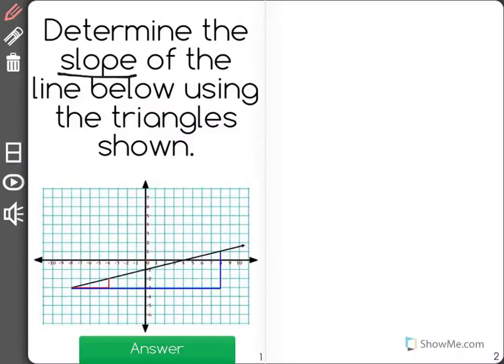Determine the slope of the line below using the triangle shown. Now here's our line. It's the black line going across that has this arrow here. I just missed it, so I'm actually going to erase it. Now you know what line we're talking about, though.